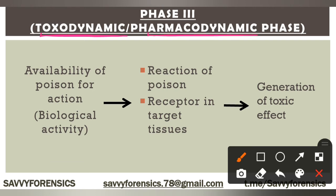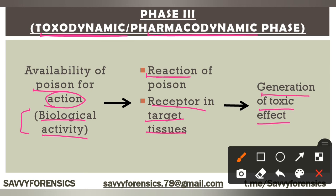Now moving to the third phase — we call it toxodynamic or pharmacodynamic phase. In Phase 3, the poison is available to show its action. It shows biological activity in your body — the poison's reaction effects on the body and its organs. This biological activity involves the poison's reaction with receptors and target tissues, leading to negative effects and ultimately the generation of toxic effects.